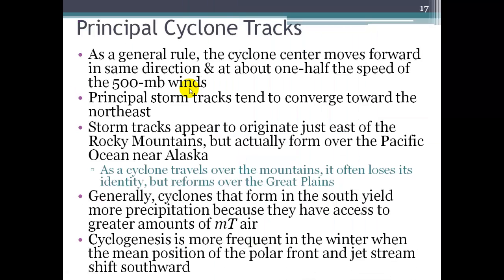There are a few different tracks that these cyclones follow. As a general rule, the cyclone center, so the low pressure center, is moving forward in the same direction, but about half the speed as the upper air winds. And the upper air winds are often called the 500 millibar winds. So the winds that blow at 500 millibars, where friction is not an issue. So the winds blow faster. So that low pressure system is moving right along with those upper air winds at about a half of the speed.